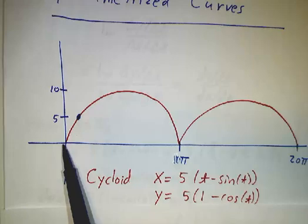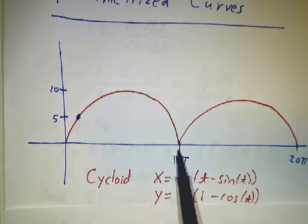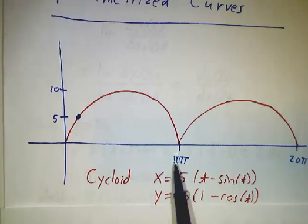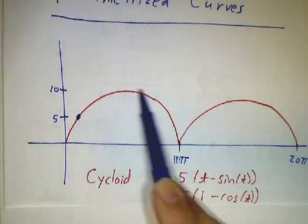At time 0, it's over here. By time 2π, it's worked its way over here. By time 4π, it's worked its way over here. Of course, the distance is 10π horizontally and 20π, but the time it takes is 2π.